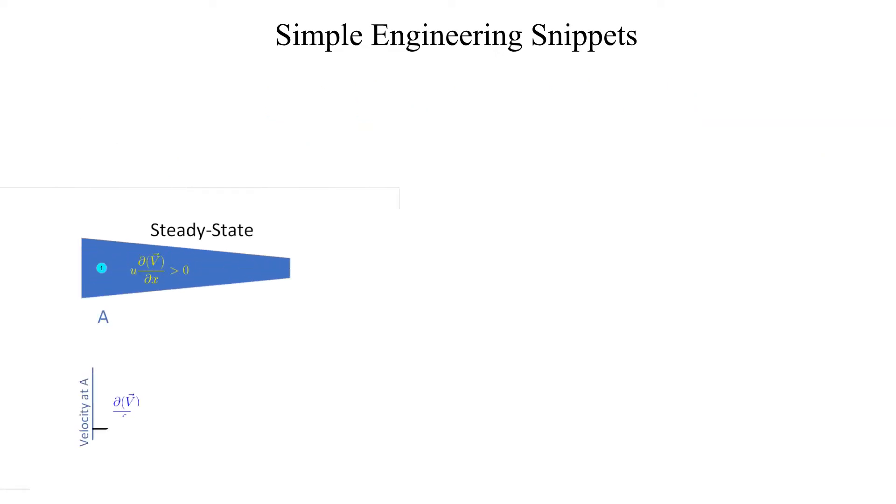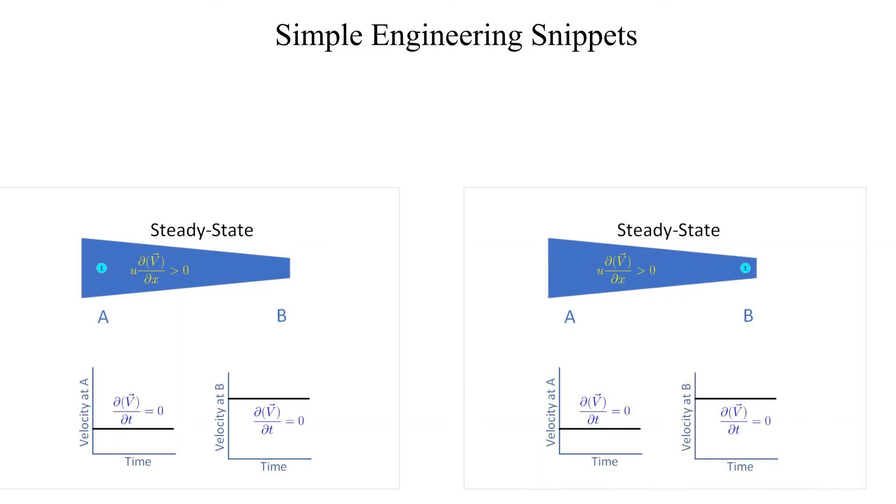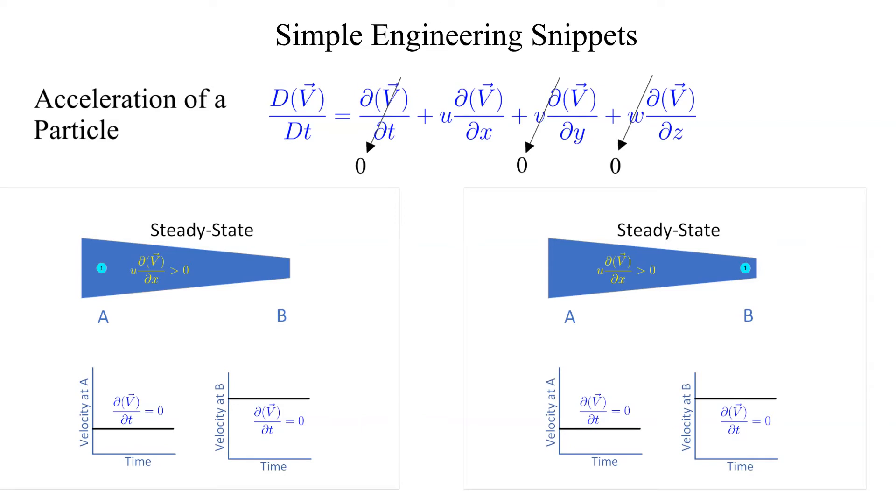Now let's substitute a nozzle in place of the straight pipe. Once again it is steady state and the y and z components of velocity are zero. However, now the partial derivative of velocity with respect to x is non-zero, in fact it is positive. A particle does accelerate as it moves from location alpha to bravo.